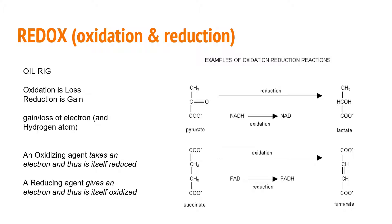OIL RIG is our memory device: Oxidation Is Loss, Reduction Is Gain. Where we see reduction, the charge of the molecule is reduced — it's become more negative because it gained an electron. Oxidation means the electrical charge becomes more positive because an electron is lost along with the hydrogen atom.